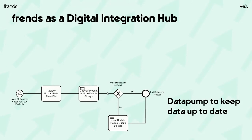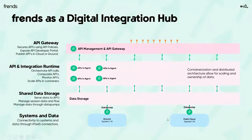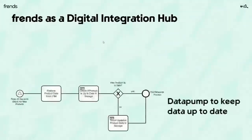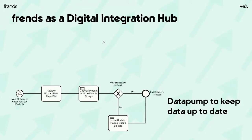The way we do that with the Friends platform is through a concept we came up with called 'data pumps.' Data pumps are typically more traditional integration processes whose only job is to detect when there's a change in the back-end systems or data sources, and update the shared storage so that the APIs above — and the API gateway even above that — can serve real-time and accurate data to API consumers.